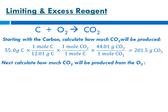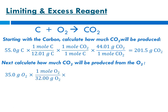Now we have to see how much carbon dioxide we can produce from the oxygen we were given. We started with 35 grams of oxygen. To go from grams to moles of oxygen, we multiply by molar mass, with moles of oxygen in the numerator and grams of oxygen in the denominator so it cancels out.